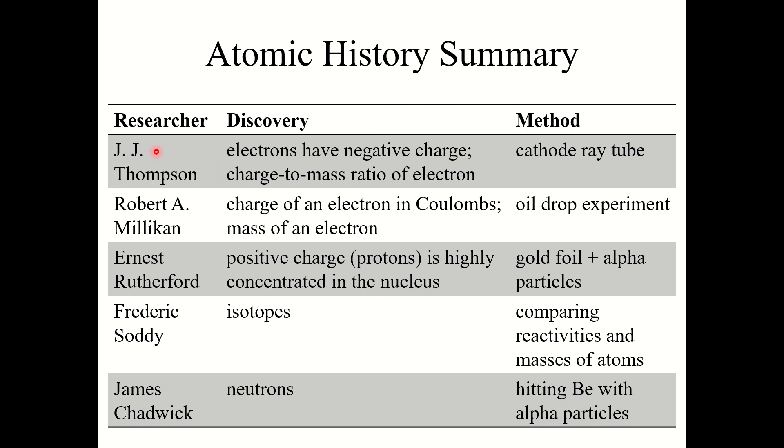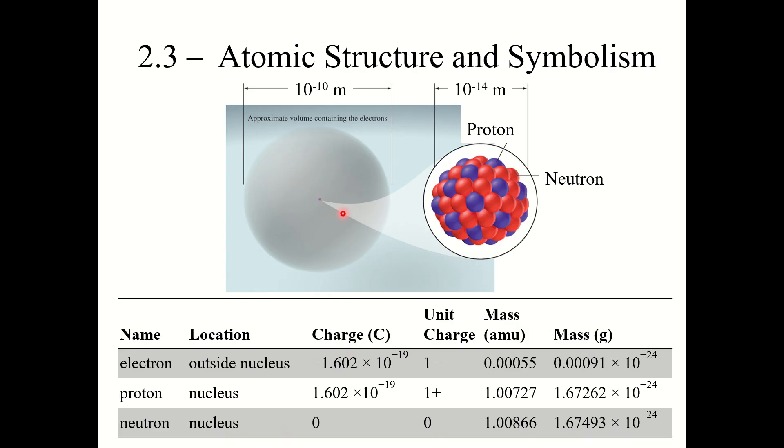So just to sum this up, JJ Thompson, he discovered that electrons have negative charge. And he discovered and determined the charge-mass ratio of an electron using a cathode ray tube. R.A. Millikan, or Robert Millikan, he discovered the charge of an electron in coulombs and the mass of an electron with his oil drop experiment. Ernest Rutherford discovered that the positive charge of protons is highly concentrated in the nucleus with his gold foil experiment. And then together, Frederick Soddy and James Chadwick discovered isotopes and neutrons. Okay, that concludes section 2.2. I'll see you in the next video for section 2.3, atomic structure and symbolism.